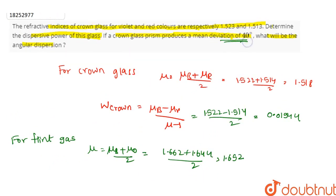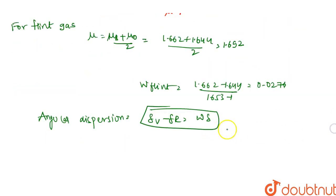This deviation is 40 degrees, and we have to find angular dispersion. Angular dispersion is equal to 40 degrees times ω, which is 0.0276. This is our answer. Thank you.